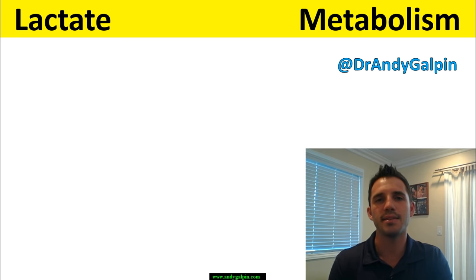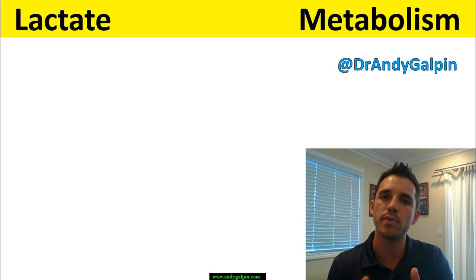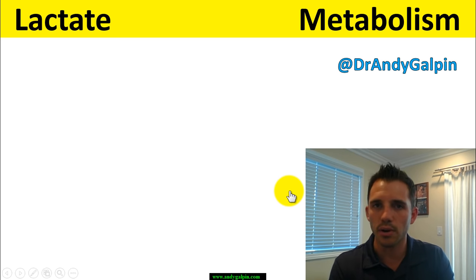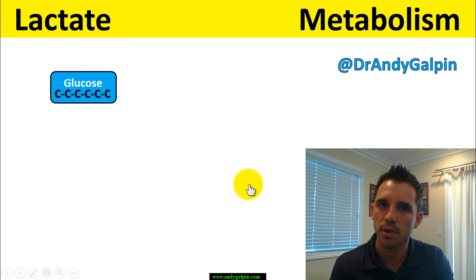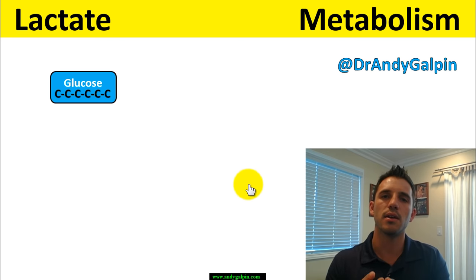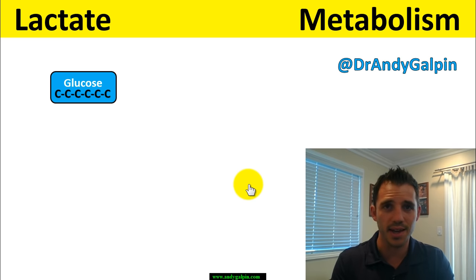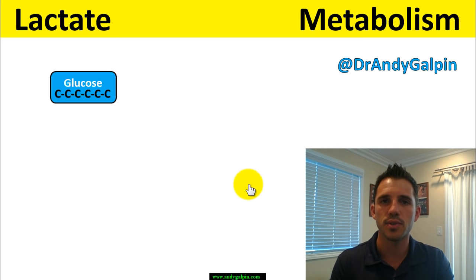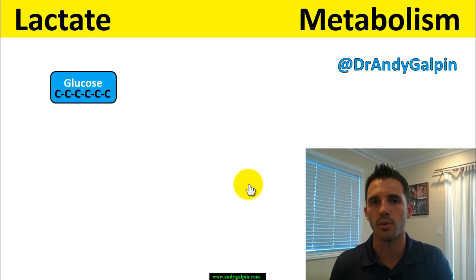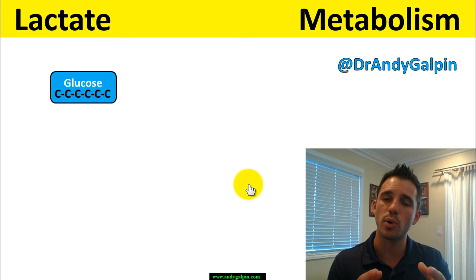Lactate is a byproduct of anaerobic metabolism — it's being generated from the metabolism of glucose. Glucose, sugar, and carbohydrate are basically the same word. If we look at the chemical name for carbohydrate, it means a carbon molecule that has been hydrated — a carbon with H₂O attached to it. That's why the chemical formula for a carbohydrate is C₆H₁₂O₆: six carbons and six waters. Glucose comes in that six-carbon chain.